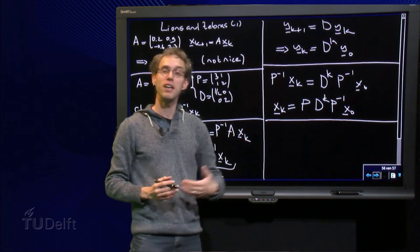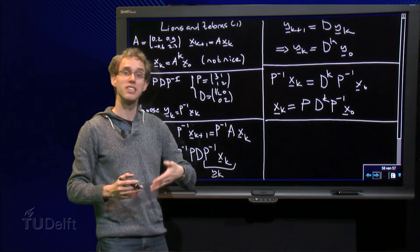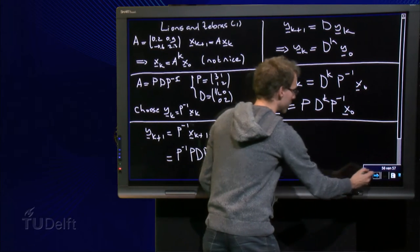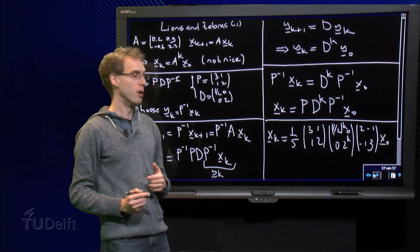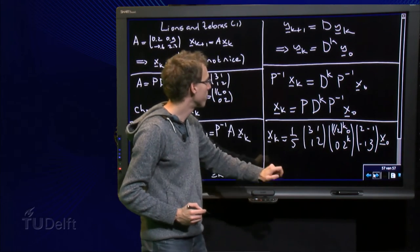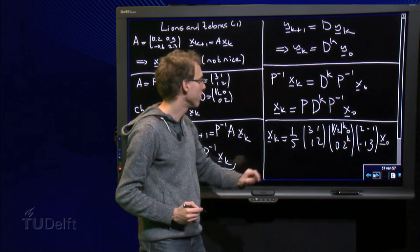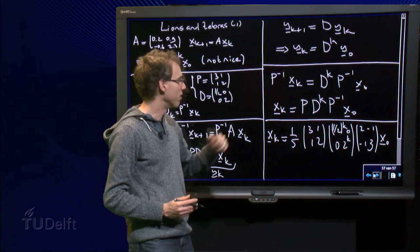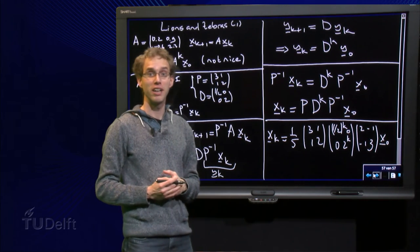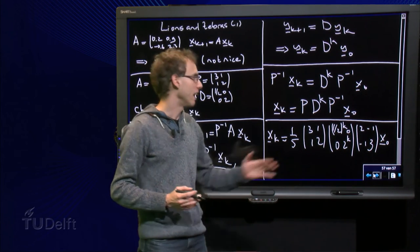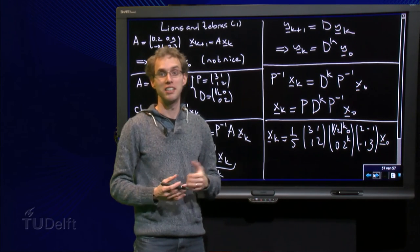It contains the power of a matrix, but that doesn't hurt now because it is the power of a diagonal matrix. So if we plug in the numbers we get x_k = D^k, the matrix P over here, and P^{-1} times 1 over 5. So we can plug in any k and any x_0 and see what happens to the lions and the zebras.